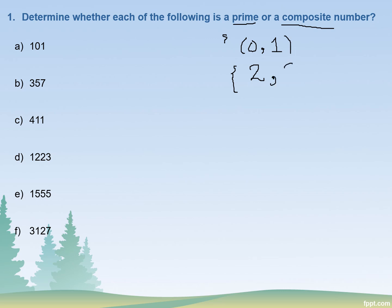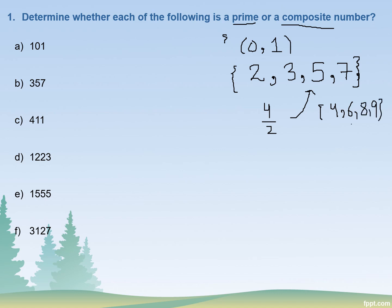Let's list down the prime numbers less than 10. There will be 2, there will be 3 because 3 is only divisible by 3 and by 1. What about 4? 4 is divisible by 2, so it cannot be in this list. 5 is a prime number because 5 is only divisible by itself and by 1. 6 is divisible by 2 and 3. 7 is divisible by itself and 1. 8 is divisible by 4 and 2. 9 is divisible by 3. So 4, 6, 8, and 9 are called composite numbers.